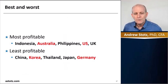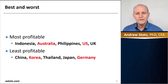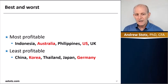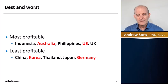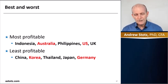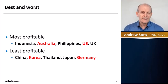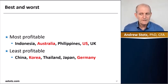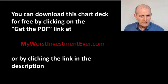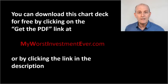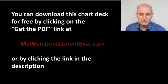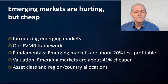Looking at a country basis, the most profitable countries are Indonesia, Australia, Philippines, U.S., and U.K. The least profitable are China, Korea, Thailand, Japan, and Germany. I've highlighted some in red — Australia, U.S., Korea, and Germany — because we're going to see them again in the next section on valuation. You can download this chart deck for free by clicking on the Get the PDF link at myworstinvestmentever.com or clicking the link in the description below.